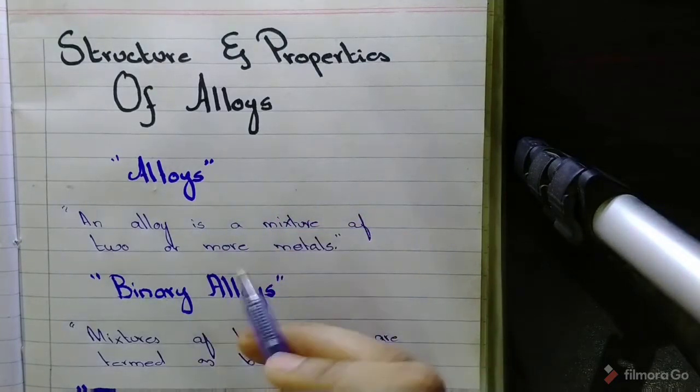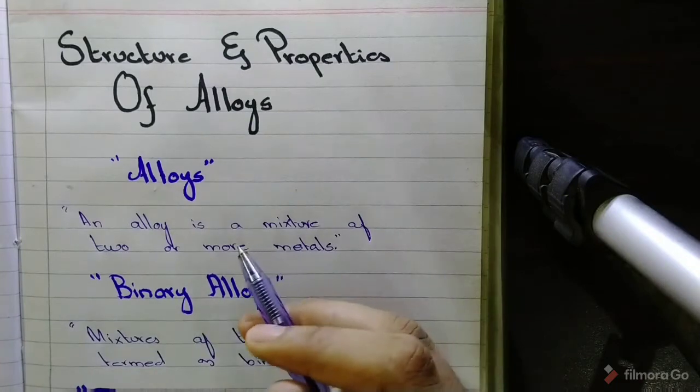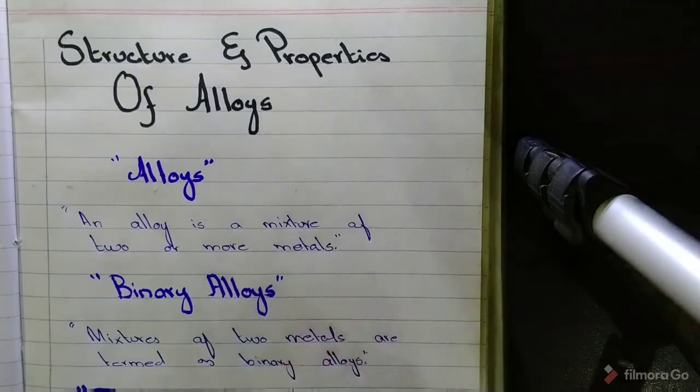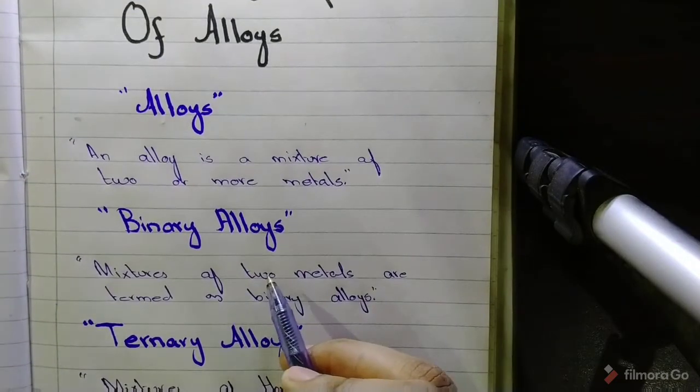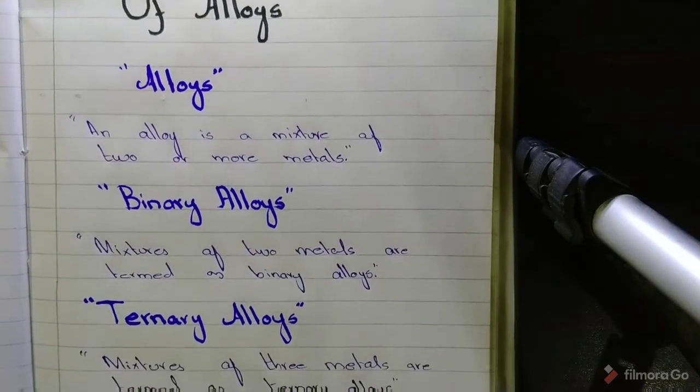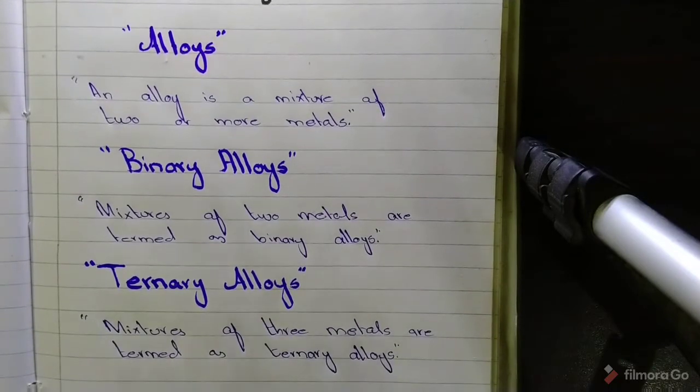So the structure and properties of alloys - I'm going to start from the very basic: what are alloys? Basically alloys are a mixture of two or more metals. If two metals are used, it is termed binary alloys, and if three metals are used, it is termed ternary alloys.